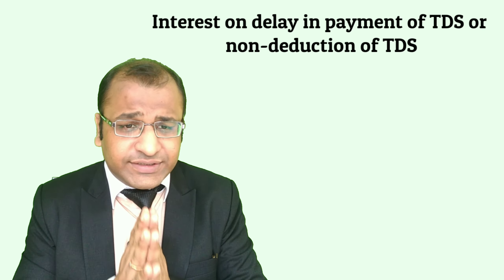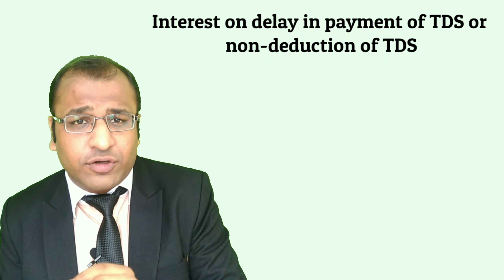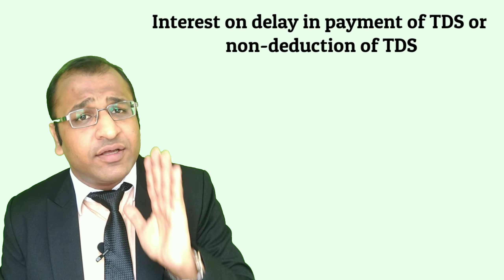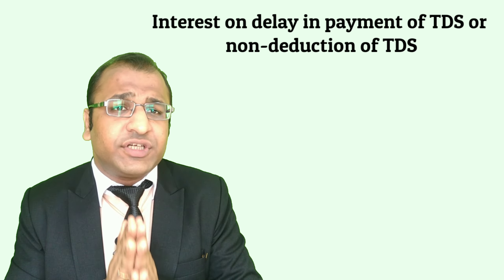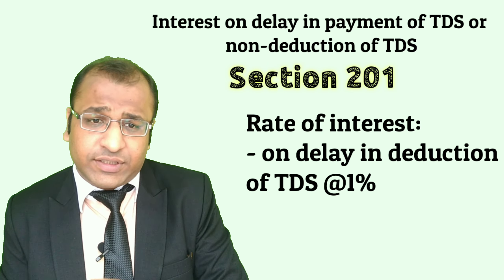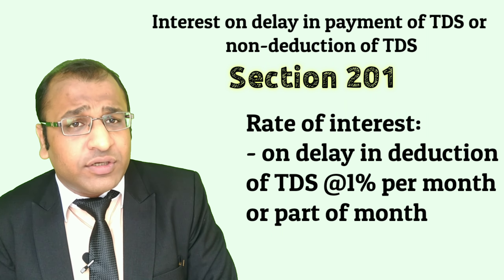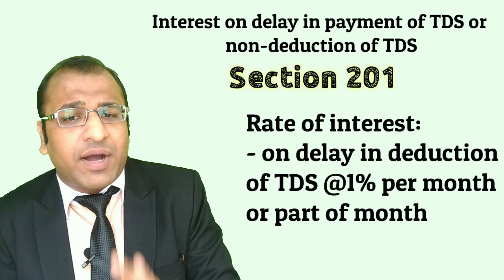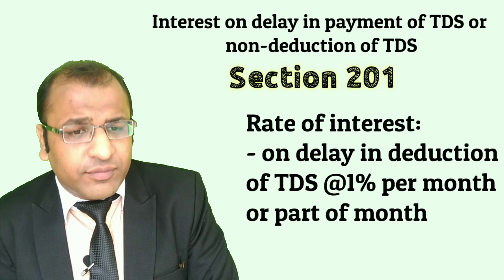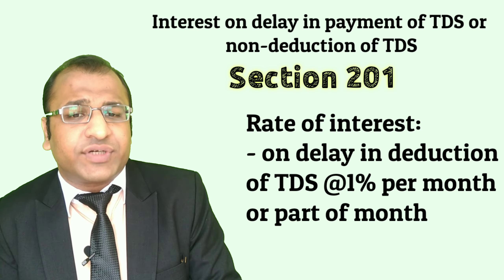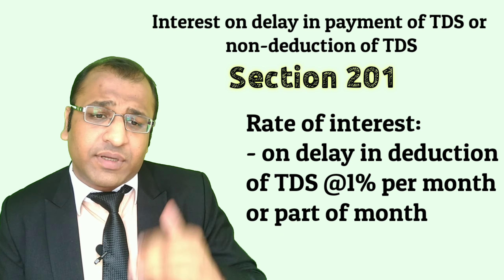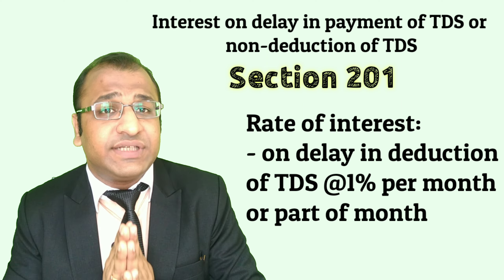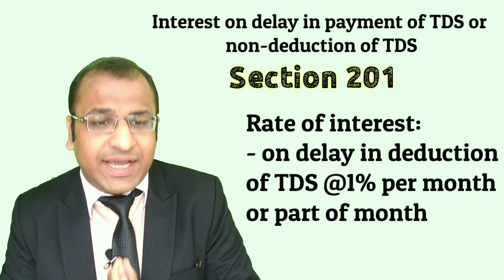First comes interest on delay in payment of TDS or non-deduction of TDS. Interest shall be levied on both non-payment of TDS or delay in payment of TDS, and non-deduction of TDS also. As per Section 201, if any person who is liable to deduct tax at source does not deduct it, or after deducting fails to pay the whole or any part of the tax to the credit of the government, then such person shall be liable to pay interest at the rate of 1% for every month or part of the month on the amount of such tax from the date on which such tax was deductible to the date on which such tax was actually deducted.